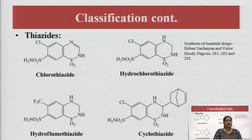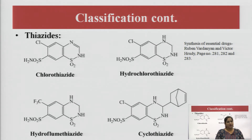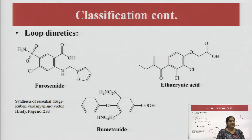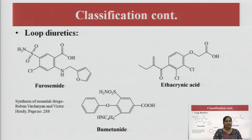The next class is thiazides — a very important class of diuretics. It has several drugs: chlorothiazide, hydrochlorothiazide, hydroflumethiazide, and cyclothiazide. The drug of interest in this class is chlorothiazide, and we are going to discuss it in detail. Next is loop diuretics, which includes furosemide, ethacrynic acid, and bumetanide. The drug of interest here is furosemide, which we will discuss in detail.